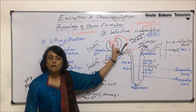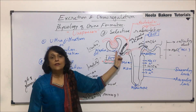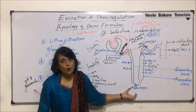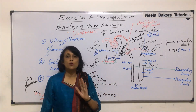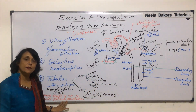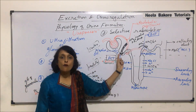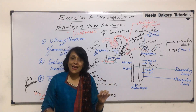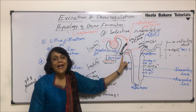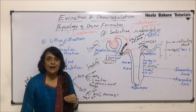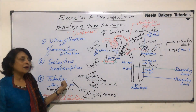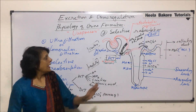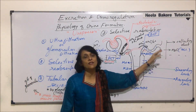To summarize, urine formation has three steps. First, ultrafiltration: blood is filtered through the glomerulus and a nephric filtrate is formed. Second, selective reabsorption: as the filtrate passes through various parts of the nephron, substances are absorbed 100% or partially depending on their threshold. Third, tubular secretion: glandular cells of PCT and DCT absorb waste from the blood in the peritubular capillaries and pour it into the filtrate. Finally, the filtrate collected in the collecting duct is called urine.